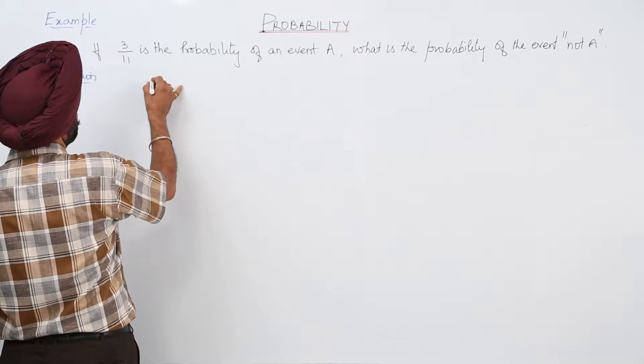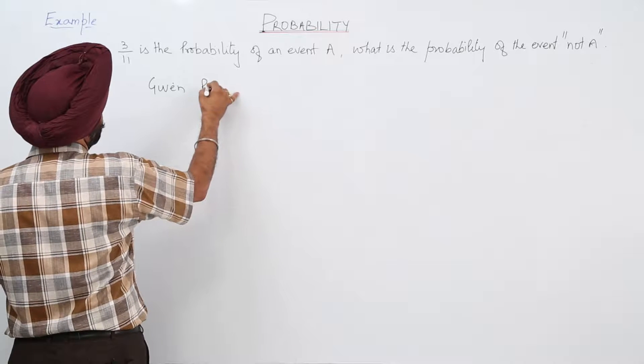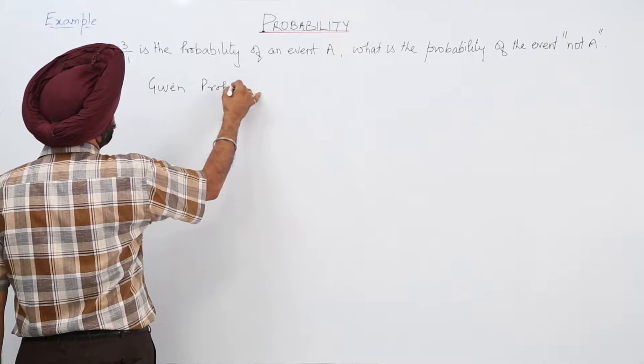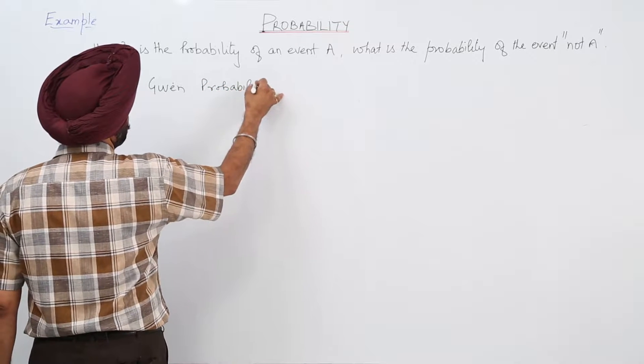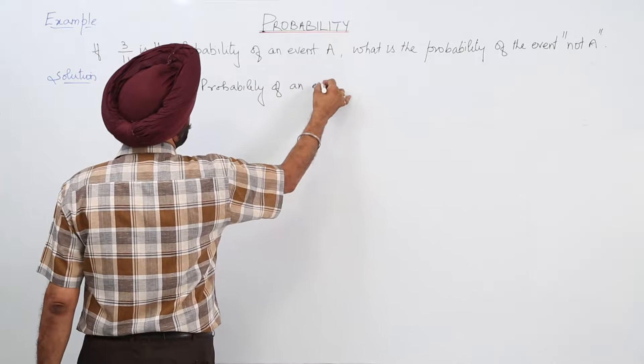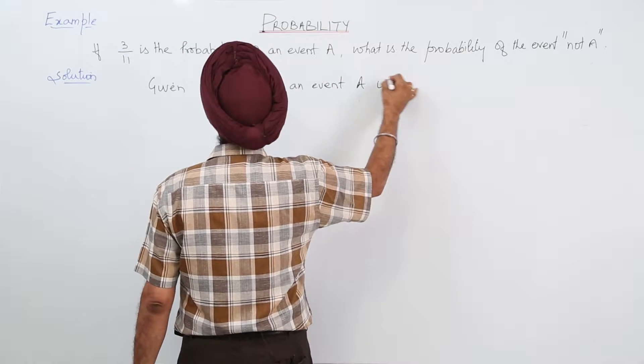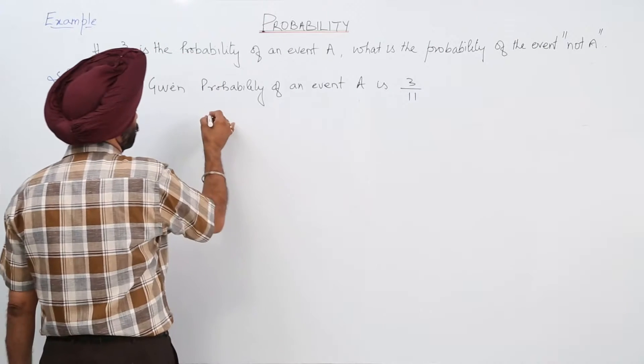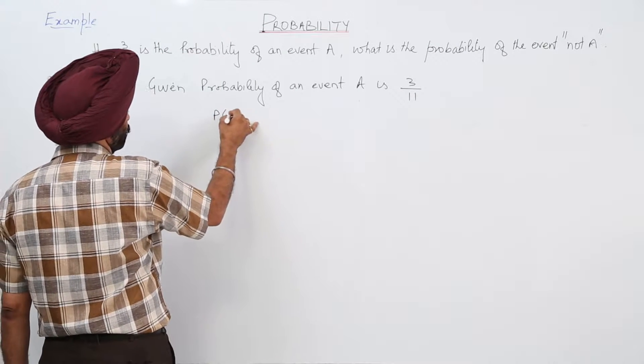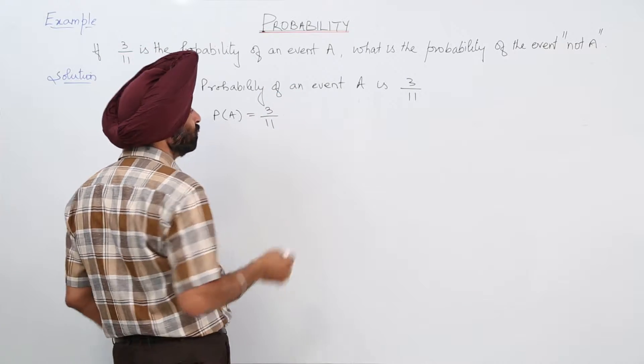Given: probability of an event A is 3 upon 11. P(A) is equal to 3 upon 11.